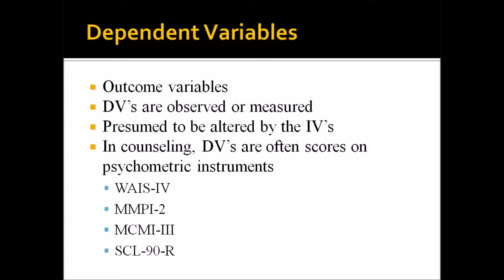For example, a score on one of the scales on the SCL-90R is likely to be a dependent variable. In the case of the brief depression treatment, that counseling treatment would be administered as the independent variable with three levels — 6, 12, and 18 weeks. One of the scales on the SCL-90R is depression, so we might look at that score and see if there was some effect of the treatment. That's how we know that score is a dependent variable.